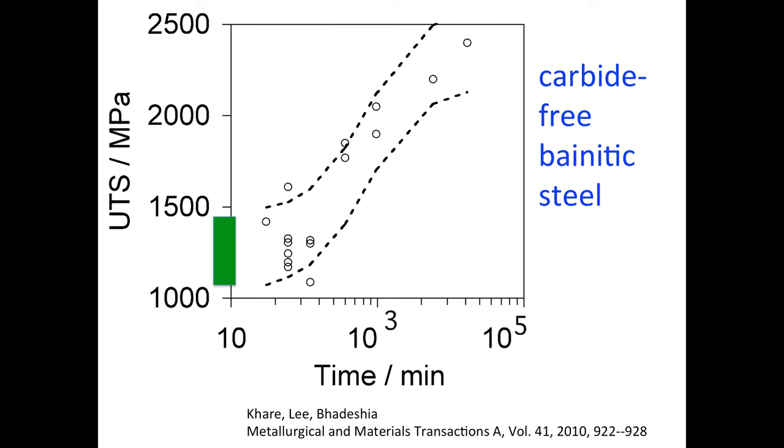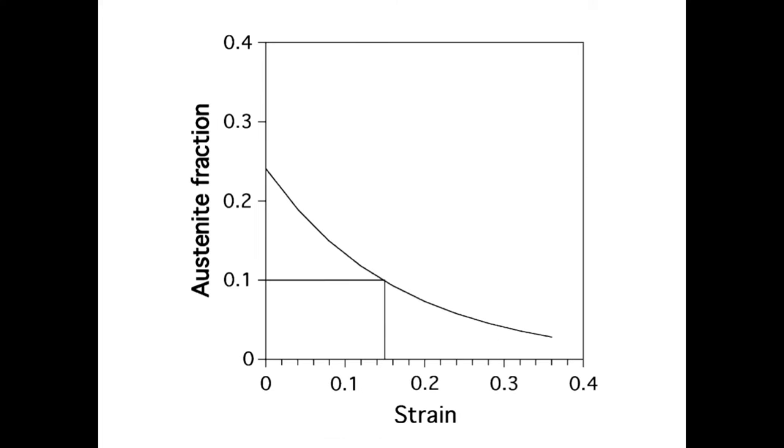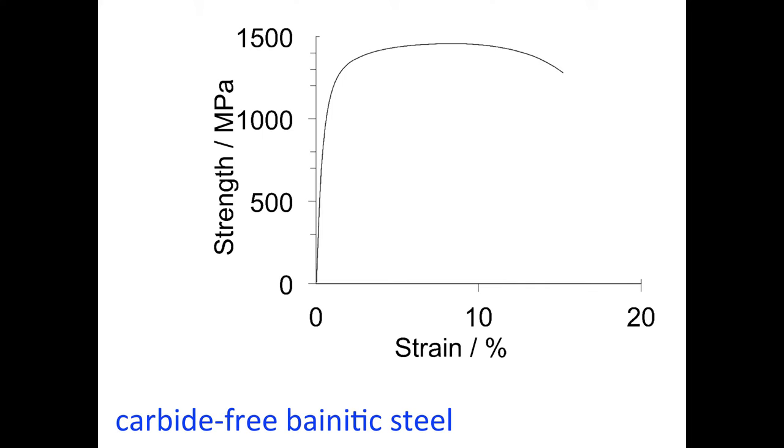So we have limited time to achieve the transformation before the strip or coil cools down. Going back to this graph, this is the region we want to work in, and it looks possible to design. All we have to do is calculate the appropriate time-temperature-transformation diagram, choose the right transformation temperature of the order of 400 or 350 degrees centigrade, and think about elongation. We use the philosophy we developed earlier: start with sufficient retained austenite and assume fracture happens when we have 10% left in the mixture, giving us elongation of about 15%.